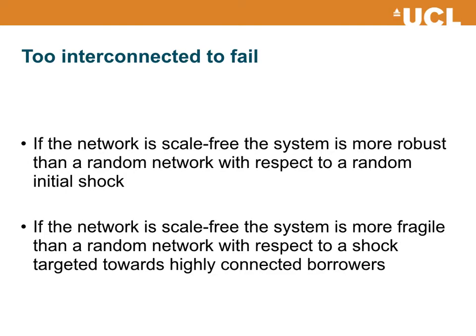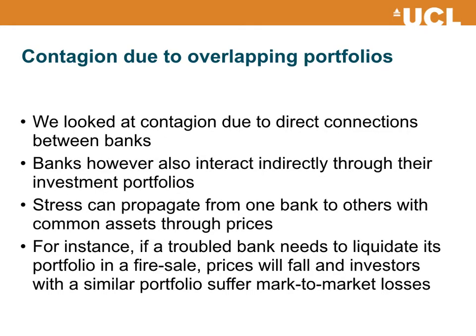This is related to the idea of some banks being 'too interconnected to fail': too interconnected to fail means that if they go down they will cause a significant disruption to the system. So far we have considered contagion due to interbank loans, but everything can be generalized to other types of relationships between banks. What we have done is to look at direct connections — like a contract between two banks, specifically a loan — but banks can also interact indirectly.